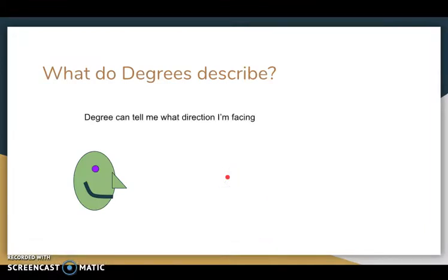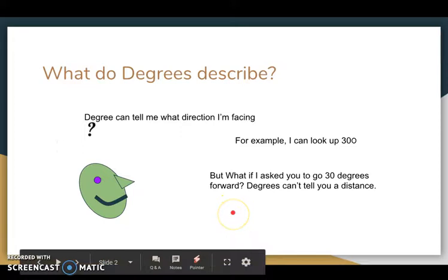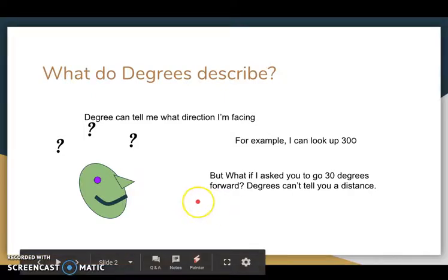So degrees can tell you a direction. They can tell you how big an angle is. For example, I can tell you to look up 30 degrees and you can tilt your head up and look up 30 degrees. But I can't ask you to move 30 degrees. Like if I asked you to walk 30 degrees, you wouldn't be able to do that. You could change and face 30 degrees or you could do 30 degrees from north. Degrees give you direction, but they don't give you a number that you can move. They're not like a real number to move forward.